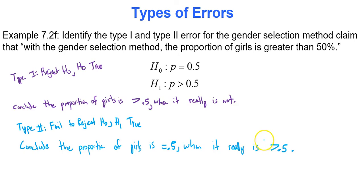We don't focus on error too much in this course; it's just important to know that hypothesis tests can have errors. Your level of significance alpha can reduce one type of error but increase the other, so you must pick a happy medium. That's all for the introduction to hypothesis testing — thanks for watching.